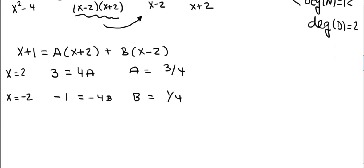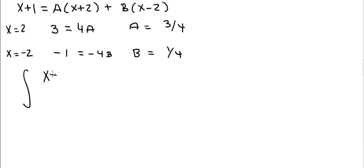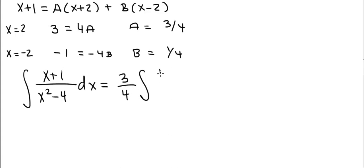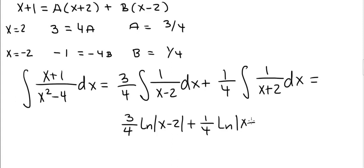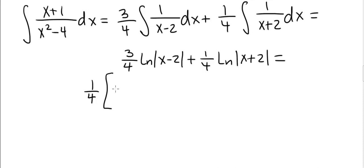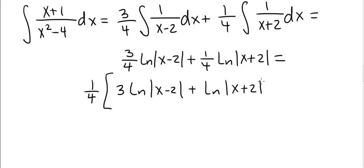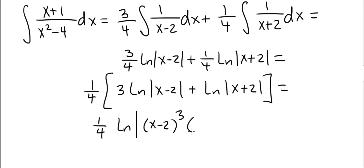Returning to the integral, the integral of x plus 1 divided by x squared minus 4 is now expressed as A, which is 3 over 4, times the integral of 1 divided by x minus 2, plus B, which is 1 over 4, times the integral of 1 divided by x plus 2. This gives 3 over 4 times the natural log of the absolute value of x minus 2, plus 1 over 4 times the natural log of the absolute value of x plus 2. Factoring out 1 over 4, this becomes 1 over 4 times the quantity 3 times the natural log of absolute value of x minus 2 plus natural log of absolute value of x plus 2, which simplifies to 1 over 4 times the natural log of the absolute value of x minus 2 cubed times x plus 2.